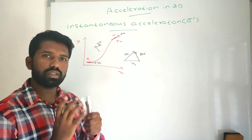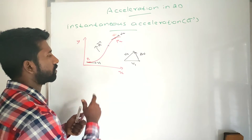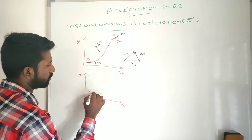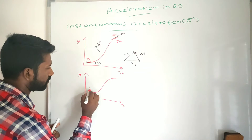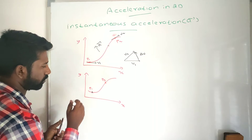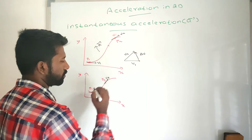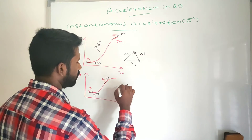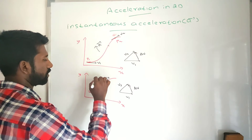For instantaneous acceleration, the time interval is very small. I consider a closer point P3 on the path. The tangent at P1 gives V1 and the tangent at P3 gives V3. The change in velocity gives the direction of acceleration. Now I consider an even closer point P4, with velocity V4. Again, the change in velocity gives the acceleration direction, which is now perpendicular to the line joining P1 and P4.